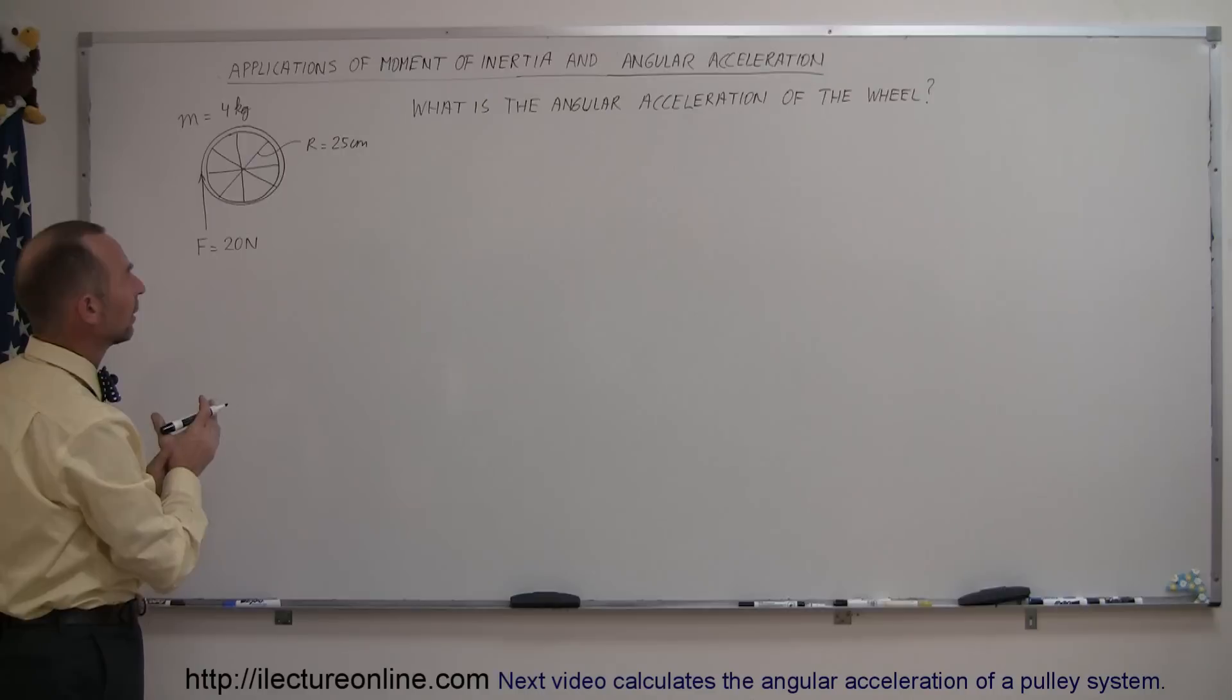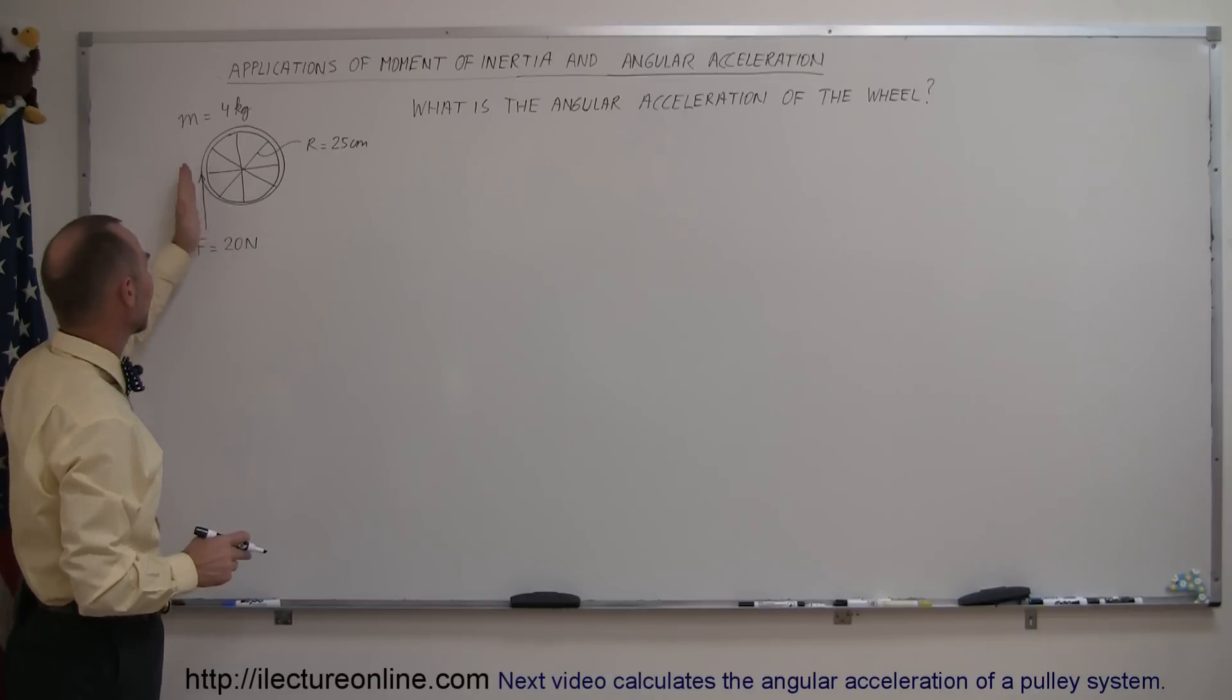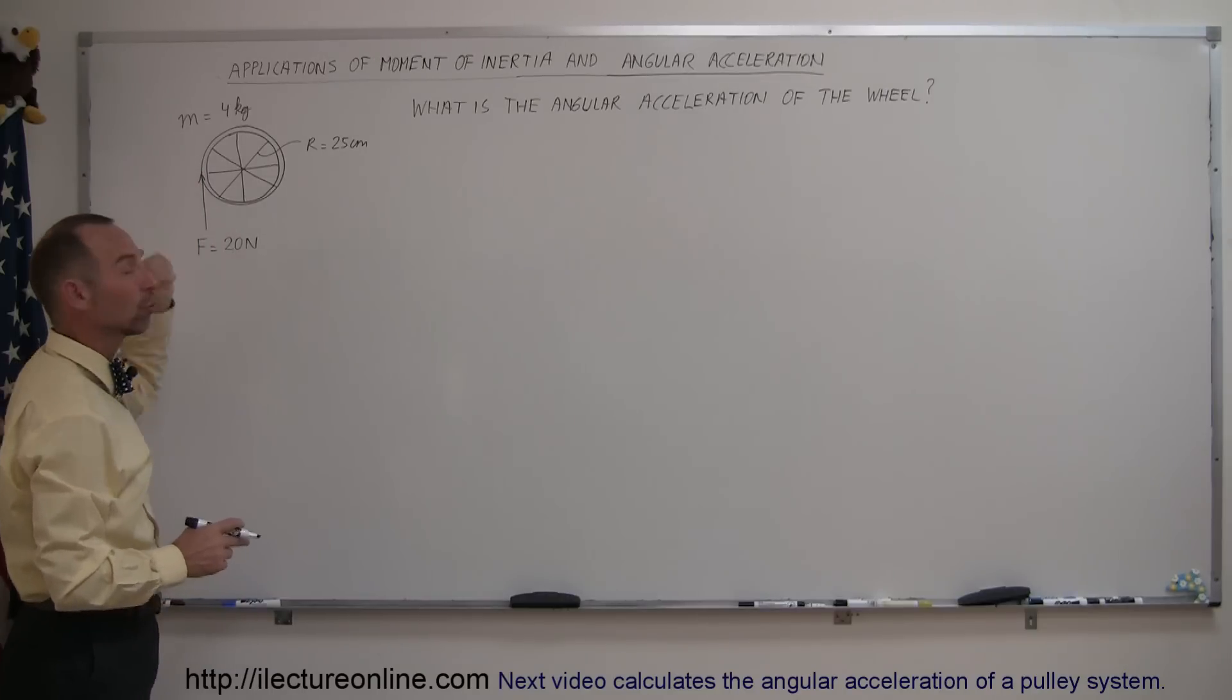We have a wheel here, and they're asking you to find the angular acceleration of the wheel. The wheel has mass, it has a radius, and we're applying a force tangential to the surface of the wheel.